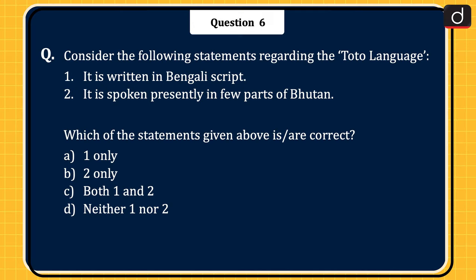The next question: consider the following statements regarding the Toto language. Statement 1: it is written in Bengali script. Statement 2: it is spoken presently in few parts of Bhutan. Which of the statements is or are correct? 1 only, 2 only, both 1 and 2, or neither 1 nor 2. The correct answer is option C, both 1 and 2.